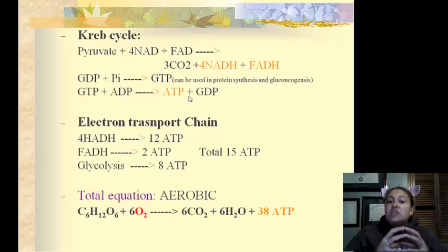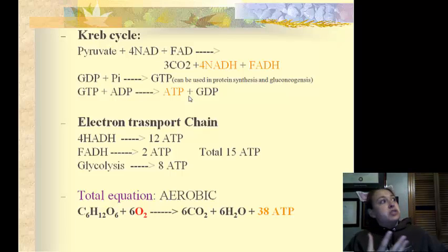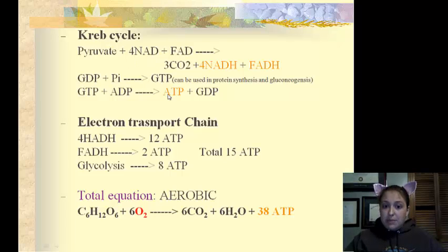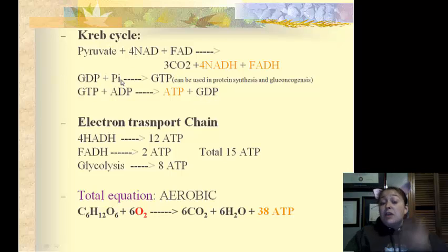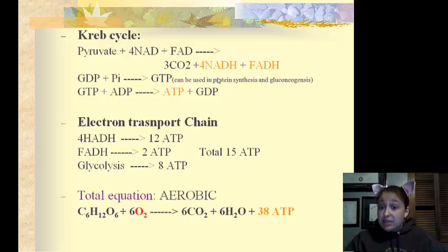GTP holds a phosphate and waits around until an ADP flows by. It says, 'Would you mind taking one of these phosphates? You can use it more than I can.' And the ADP says, 'Thank you,' and turns into ATP. So the GTP gives up a phosphate and creates ATP, and then GDP. GDP can go back and pick up another phosphate and become GTP again. If GTP does not happen to find an ADP, it can be used in protein synthesis or gluconeogenesis — the creation of new glucose.